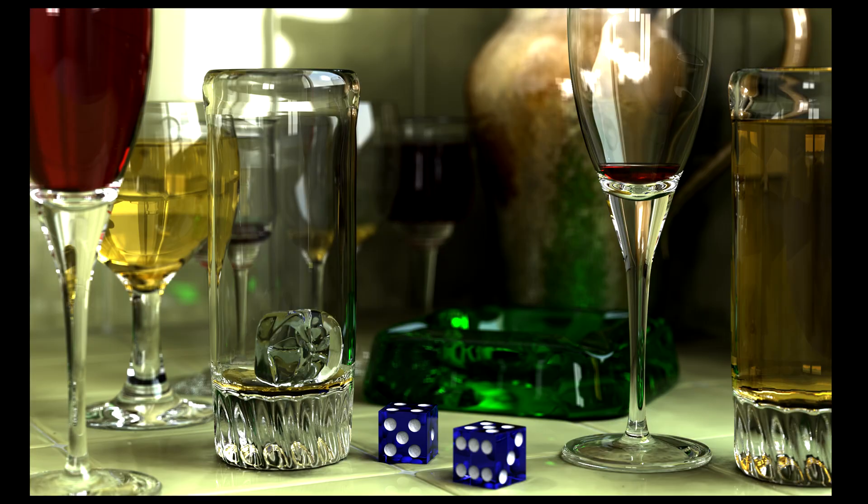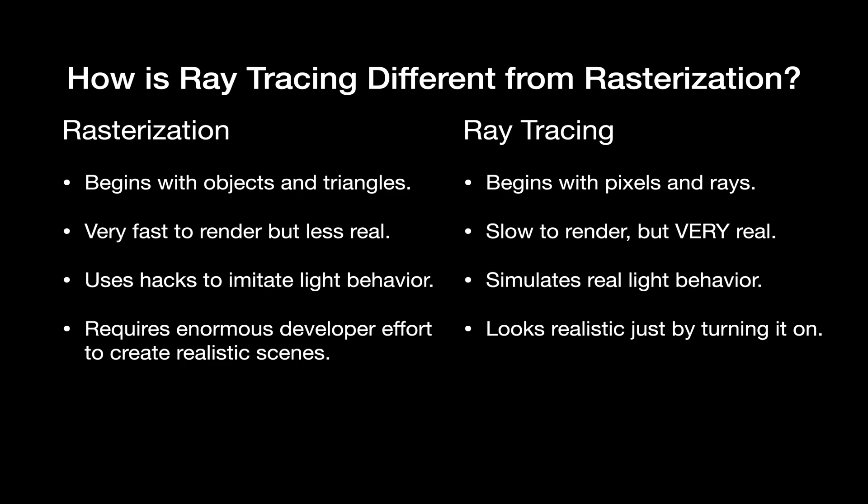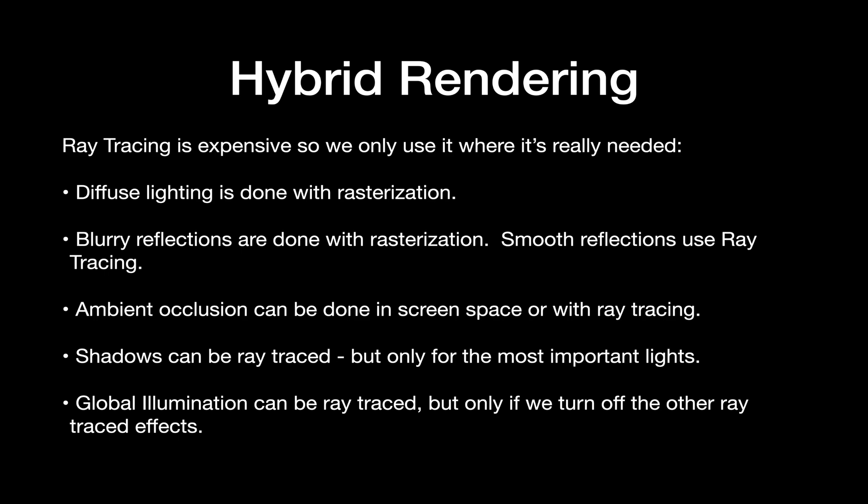Rasterization uses hacks like reflection volumes, baked lighting, cascaded shadow maps, and screen space ambient occlusion to mimic the appearance of light, while ray tracing simulates real light behavior with no hacks. Making rasterization look realistic requires a ton of effort by the developers to set up and create all those hacks, while ray tracing can look amazing and basically just needs to be turned on.